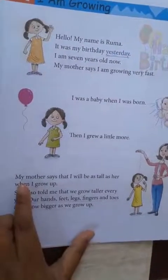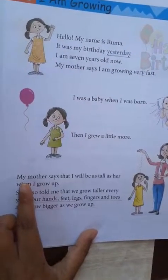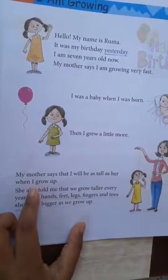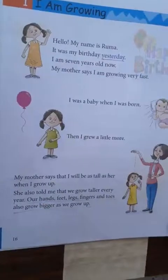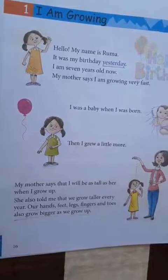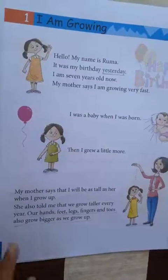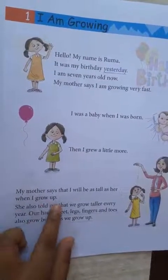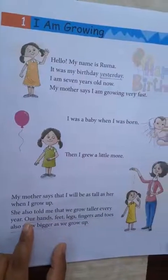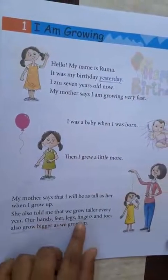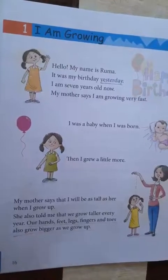Now see what it has written here. My mother says that I will be as tall as her when I grow up. When you grow up, you will also become as tall as your mother. Likewise, Ruma will also become as tall as her mother when she grows up. She also told me that we grow taller every year. Our hands, feet, legs, fingers, and toes also grow bigger as we grow up.